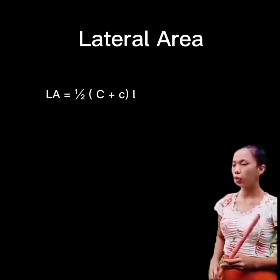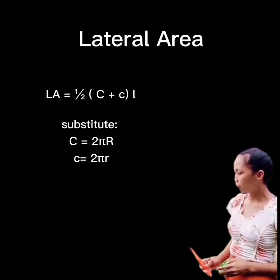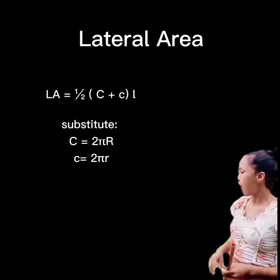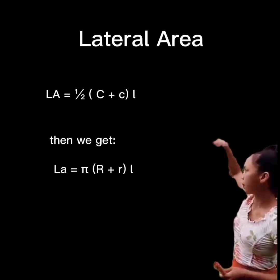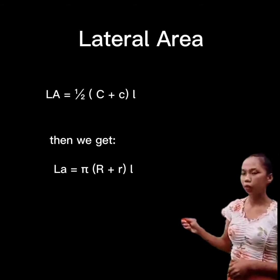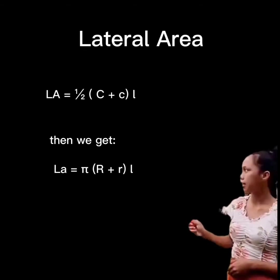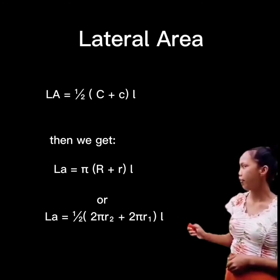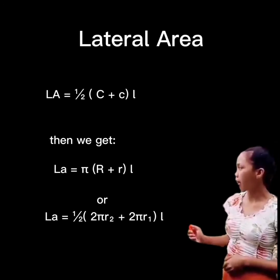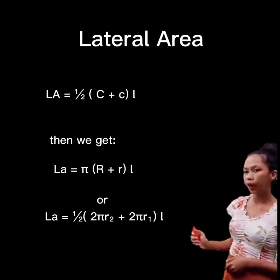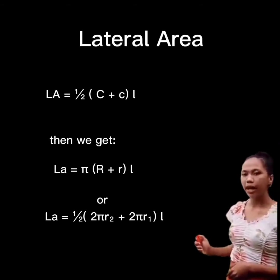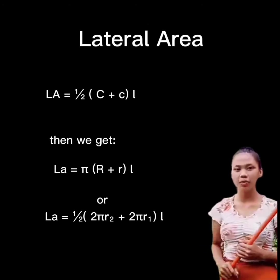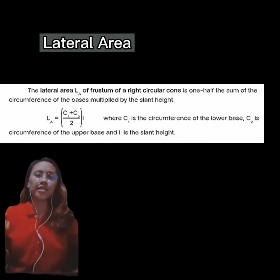A more convenient formula is obtained by substituting C = 2πr for each circumference, giving: Aₗ = π(r₁ + r₂) × l, or equivalently Aₗ = (1/2)(2πr₂ + 2πr₁) × l. Using this formula we can find the lateral area of the frustum of a right circular cone.